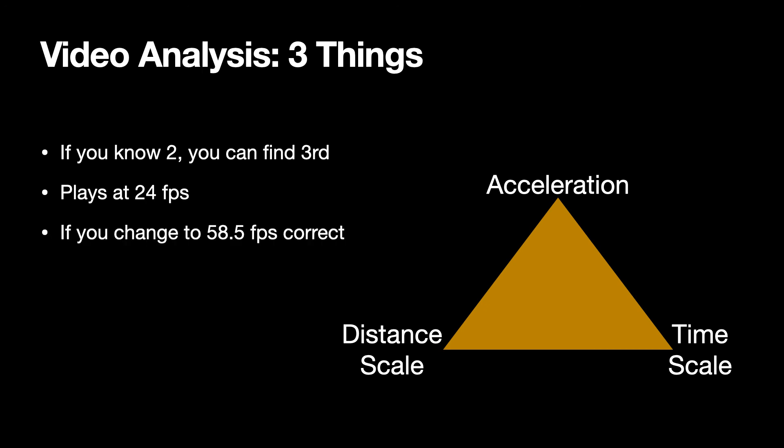But you could change that frame rate and play it back at different speeds. If I change the frame rate to 58.5 frames per second and I then measure the acceleration of the Kentucky Fried Chicken Bucket, I get the correct acceleration of 9.8 meters per second squared for falling object.